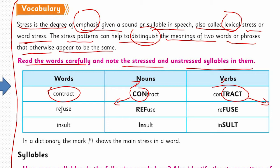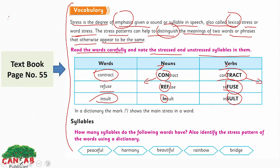In the verb 'contract,' the emphasis is on 'tract.' The second word is 'refuse' — the syllable 'ref' is emphasized in the noun, while 'refuse' as a verb has emphasis on 'fuse,' meaning to say no to something or someone. The third word is 'insult' — 'in' is the stressed syllable in the noun category, while in the verb category, the stress shifts to the second syllable.